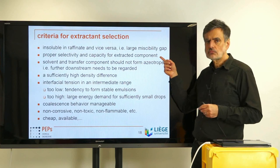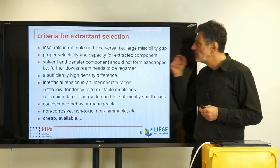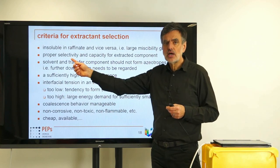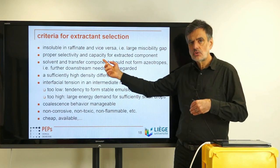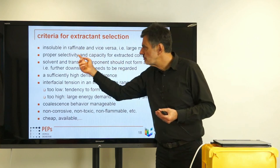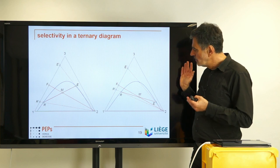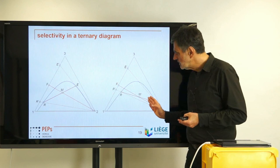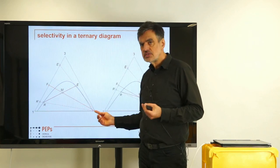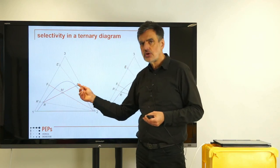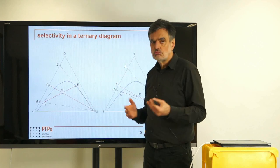A high selectivity of the extractant for the transfer component is key — this allows you to outperform distillation in terms of overall process cost. The capacity must also be sufficiently high, meaning the solubility of the transfer component in the extractant should be high enough. To illustrate this, consider the equilibrium on a ternary diagram: if the tie line has a positive slope, the concentration of the transfer component in the extract is significantly higher than in the raffinate, giving a high enrichment ratio E' over R'. If the slope is negative, enrichment is still possible but the ratio is much less, requiring higher flow rates or more theoretical stages.